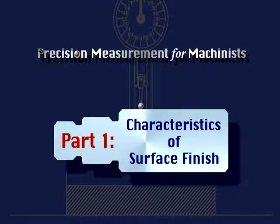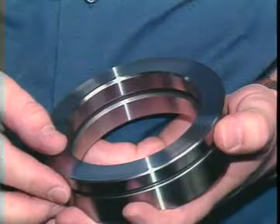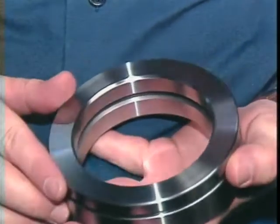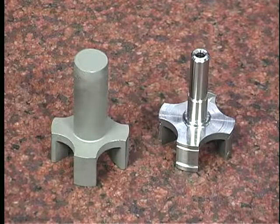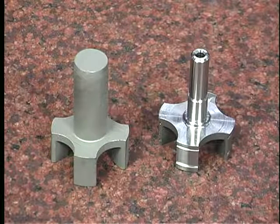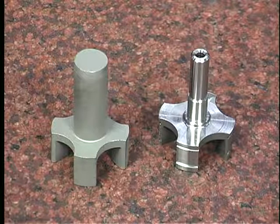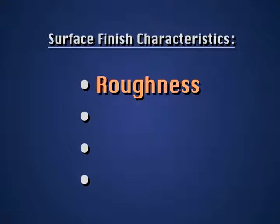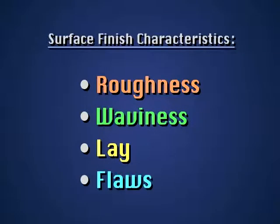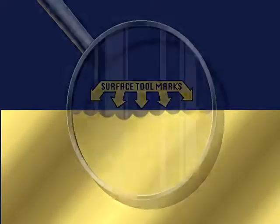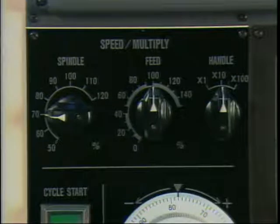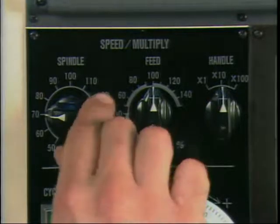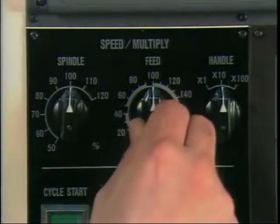Part 1: Characteristics of Surface Finish. When you look at and feel the surface of any given workpiece, you can get some idea how rough the finish is. No matter how rough or smooth the surface finish is, there are four characteristics that may need to be measured: roughness, waviness, lay, and flaws. Roughness is basically tool marks left on the surface by the cutting edge of the tool. It consists of small irregularities and is a natural result of the cutting operation. Roughness cannot be avoided, but can be adjusted by changing feeds and speeds or using a different type or style of tool.